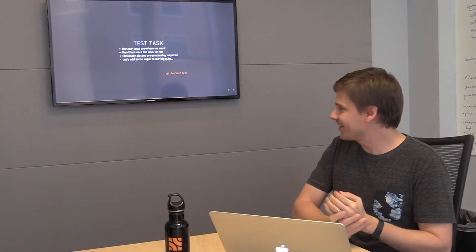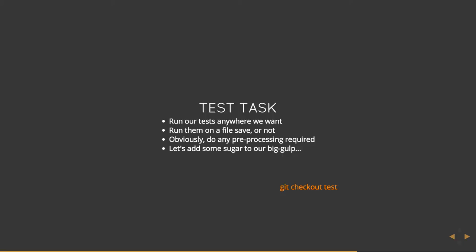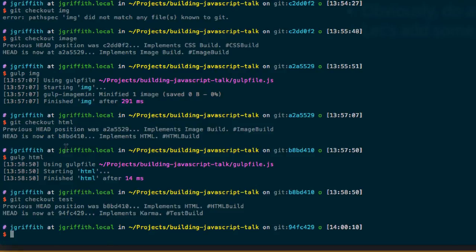This one is near and dear to my heart — the test task. You're going to have a lot of wins after this. We want to run unit tests in any browser. If you're supporting a lot of browsers, it's something you have to test on all of them. We want to run them anytime we save a file — so as you're writing unit tests, anytime you trigger a save, it'll run those tests in the appropriate browsers. Or we can just run it once for a clean pass. The only tricky thing is we have preprocessing happening, so we need that to happen before we run tests. We do `git checkout tests` and we're now in our test portion of the build.